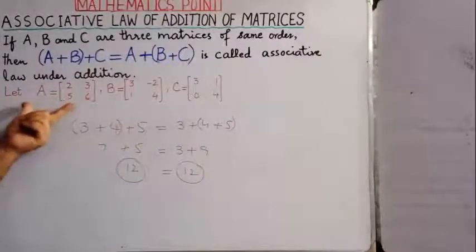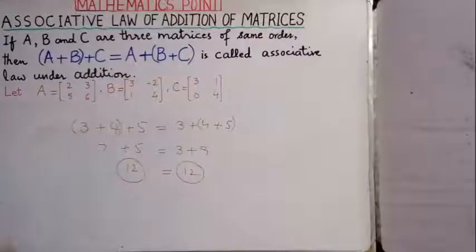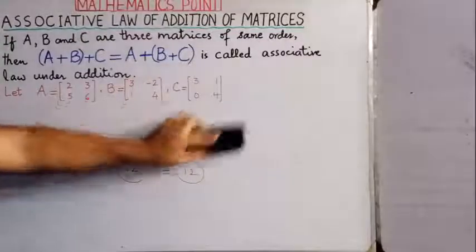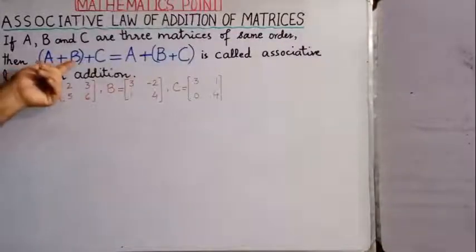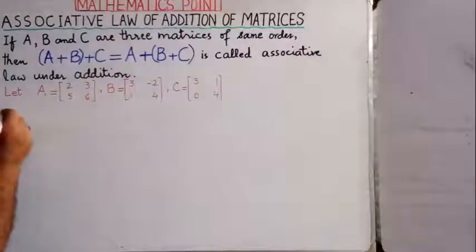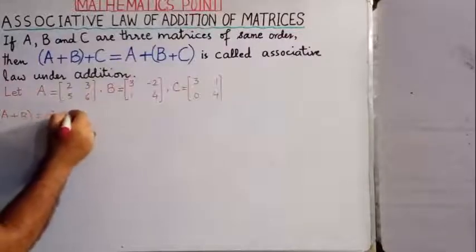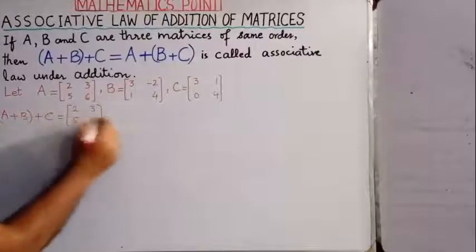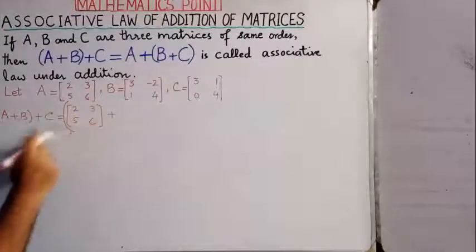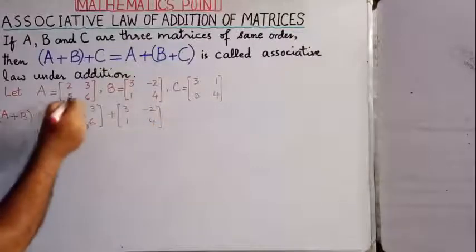Students, note that I have taken 3 matrices here. Now we will solve this properly and then verify it — we will see what answer the left-hand side and right-hand side give. For the left-hand side, we have (A + B) + C. Matrix A has elements 2, 3, 5, 6 and matrix B has elements 3, −2, 1, 4.